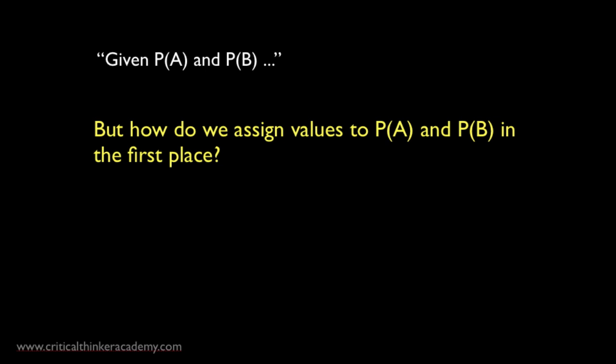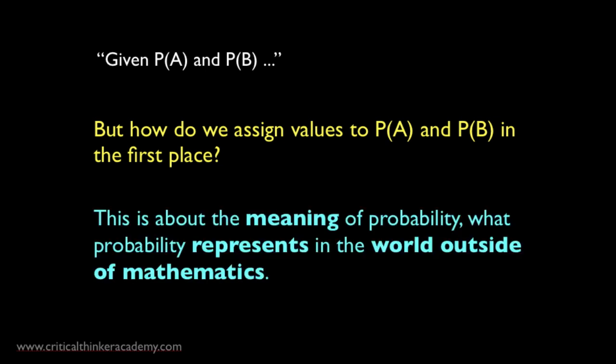Here's a question: How exactly do we assign values for the probability of A and B in the first place? The mathematics of probability doesn't really address this question. Now why not? Because this is really a question about what it means to say that the probability of an event is such and such.